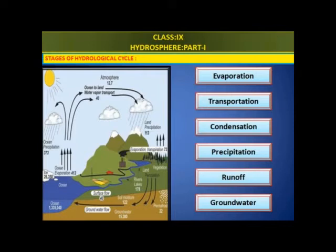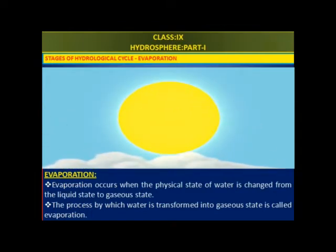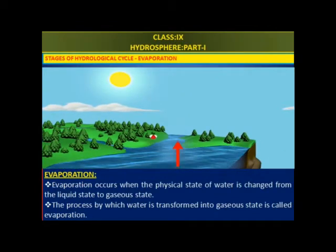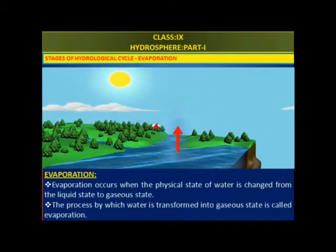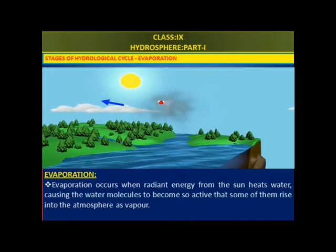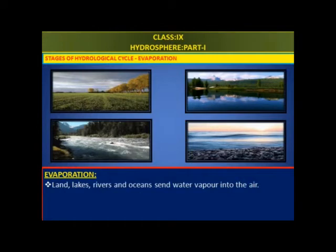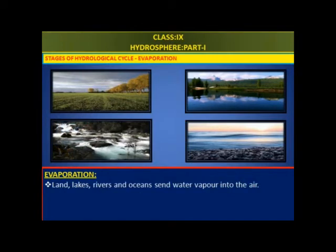Evaporation occurs when the physical state of water is changed from the liquid state to the gaseous state. The process by which water is transformed into a gaseous state is called evaporation. Evaporation occurs when radiant energy from the sun heats water, causing the water molecules to become so active that some of them rise into the atmosphere as vapor. Land, lakes, rivers, and oceans all send water vapor into the air.